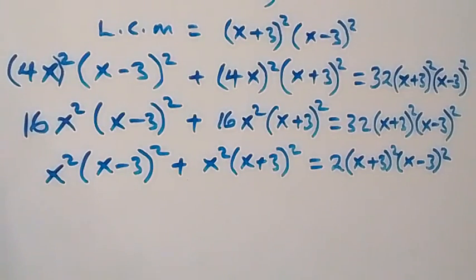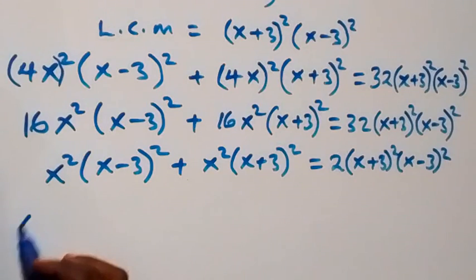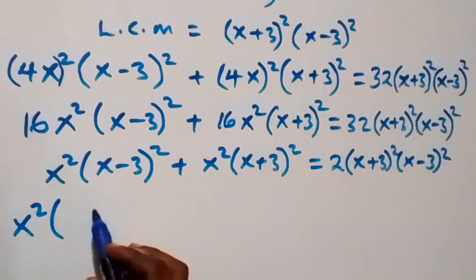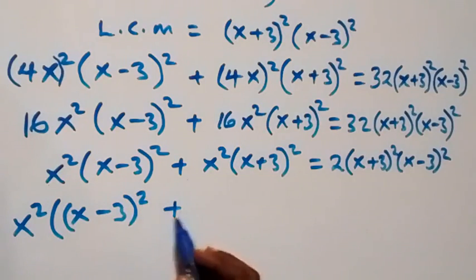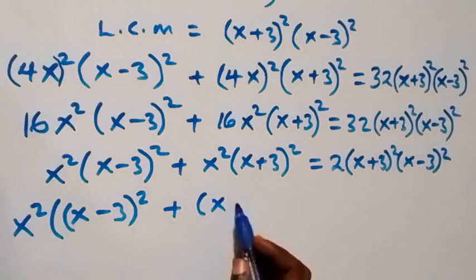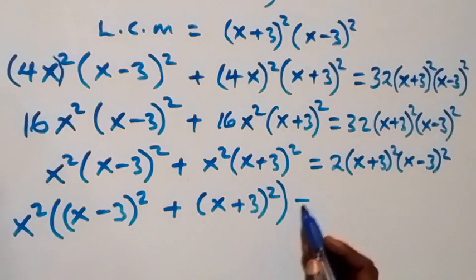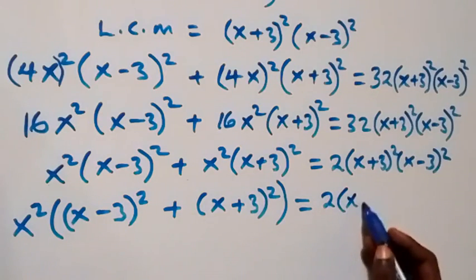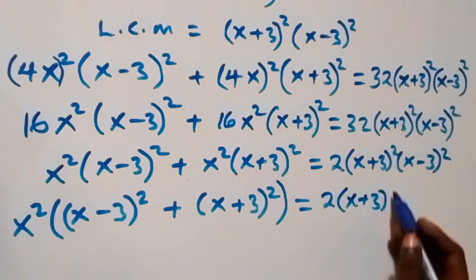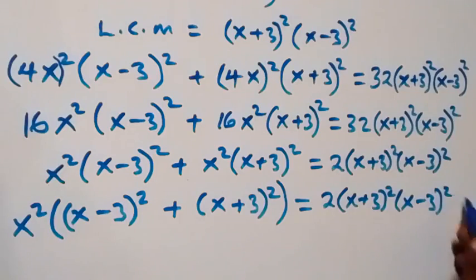We can factor x² out. This becomes x² into bracket [(x+3)² + (x-3)²], equals 2 into bracket (x+3)² times (x-3)².